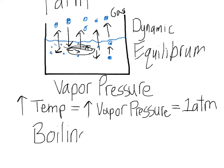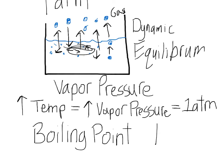The boiling point is the exact temperature at which the vapor pressure equals the atmospheric pressure — or the pressure that the air is pushing back on the water molecules. So if we keep increasing the temperature of water, increasing the vapor pressure, we can guess what temperature the vapor pressure of water equals the atmospheric pressure. That temperature is 100 degrees Celsius.